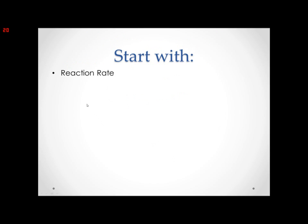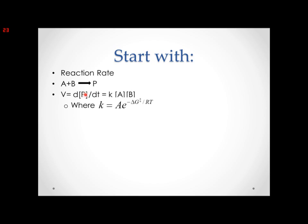To start with, let's do a quick review of reaction rate. If I have this reaction — A plus B goes to form P — and I want to find how fast P is being formed, then I'm going to be looking for the reaction rate equation. The velocity of P formation is dP over dt. The change in the concentration of P over the change in time is equal to a rate constant K times the concentration of A times the concentration of B.